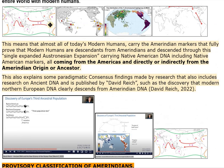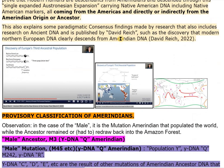This also explains some paradigmatic consensus findings made by research that includes research on ancient DNA, published by David Reich, such as the discovery that modern northern European DNA clearly descends from Amerindian DNA — David Reich, 2022.